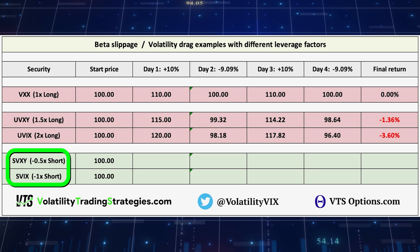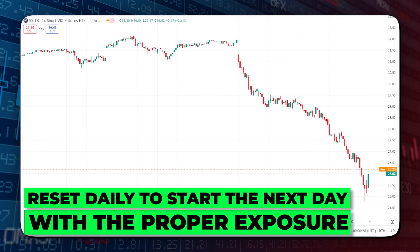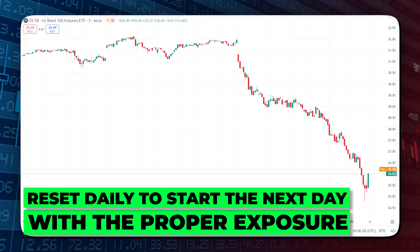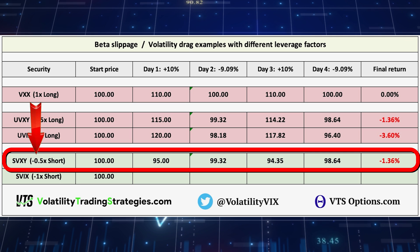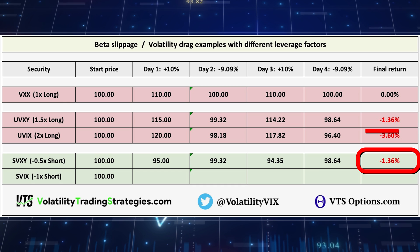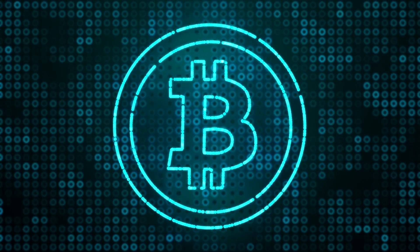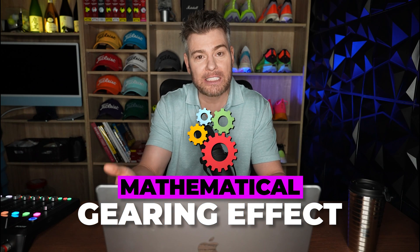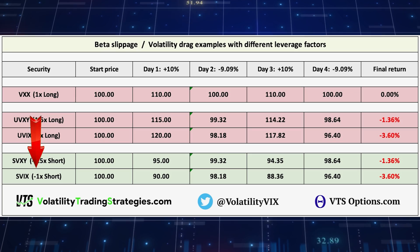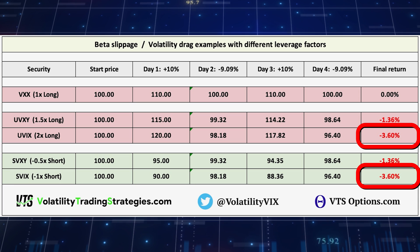Now let's look at the interesting case of inverse volatility ETPs — SVXY and SVIX. They may not look like traditional leveraged funds because they're negative, but they also do a daily resetting to start the next day with the proper exposure. The minus 0.5 times SVXY going through the same four-day period will lose value due to that beta slippage — and notice that the minus 0.5 times SVXY has the same inefficiency as the 1.5 times long UVXY. This beta slippage has nothing to do with it being a volatility product — the exact same effect occurs with leveraged stock market ETFs, natural gas, precious metals, crypto — it's a mathematical gearing effect caused by the leverage itself. The minus 1 times inverse has even more beta slippage — more than twice as bad as the minus 0.5 SVXY, and actually the same as the two times long UVXY.